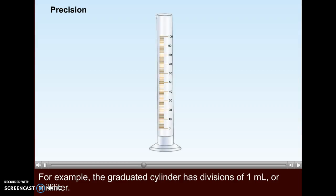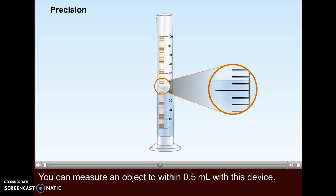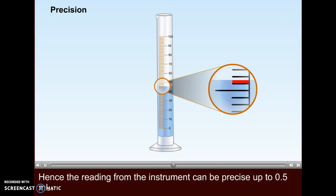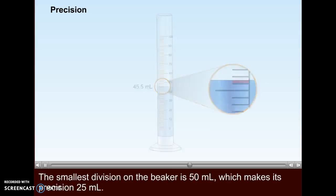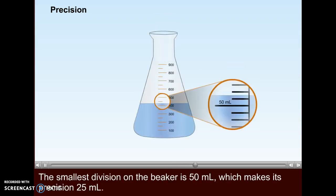For example, the graduated cylinder has divisions of 1 milliliter. You can measure an object to within 0.5 milliliters with this device. Hence, the reading from the instrument can be precise up to 0.5 milliliters. The smallest division on the beaker is 50 milliliters, which makes its precision 25 milliliters.